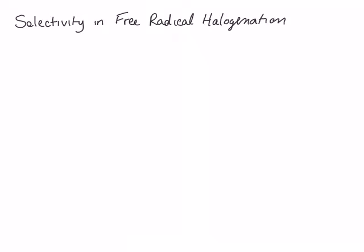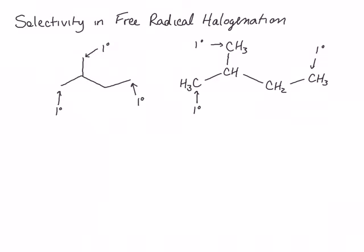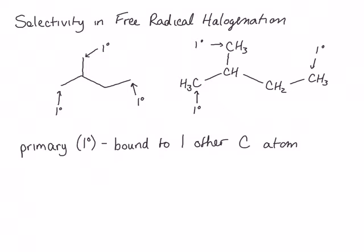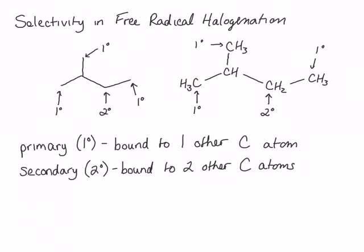We can differentiate carbons based on the number of carbons they're bound to. This molecule has three primary carbons — primary carbons are bound to only a single additional carbon atom. It also has a secondary carbon, which is bound to two other carbon atoms, and a tertiary carbon atom, which is bound to three other carbon atoms.